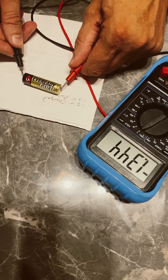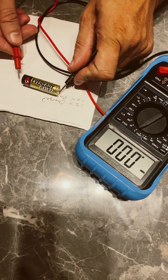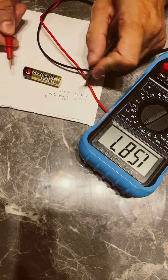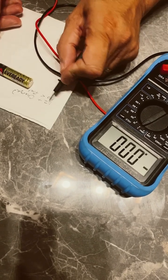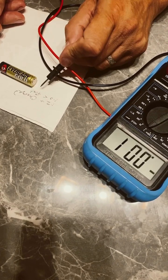So now I know this side's positive, this side's negative, and it's over 1.5 so it's fully charged. Over 1.2 so it's fully charged, and it's not below 1.0 so not flat.